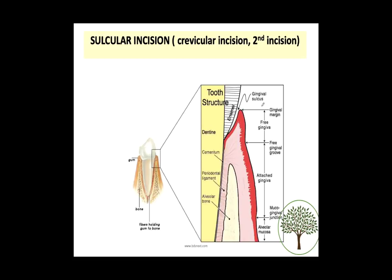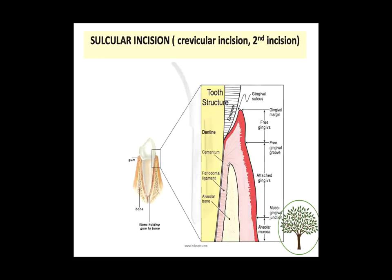The second incision, given at number 2 in modified Widman flap, is also known as the sulcular or crevicular incision because it's given inside the gingival sulcus. The aim is to cut the gingival, crestal, and periodontal ligament fibers to gain access. So this incision is given inside the gingival sulcus — that is your crevicular or sulcular incision, also known as the second incision.